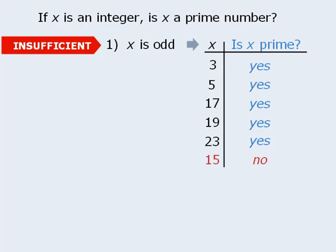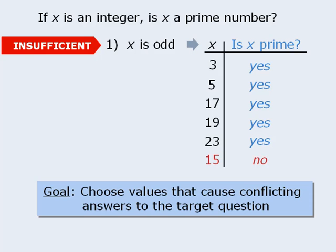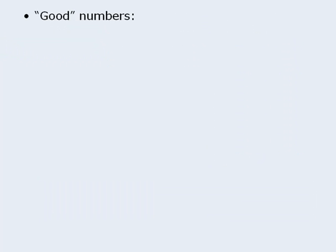The table method is useful when we suspect that a statement may be insufficient. The table method will only yield conclusive results if we are able to choose numbers that yield different answers to the target question. When choosing numbers for your table, your goal should be to choose numbers that will cause conflicting answers to the target question. To accomplish this, we want to choose good numbers. Good numbers are numbers that represent a nice cross-section of all numbers.